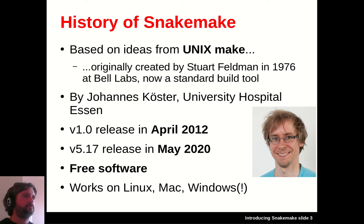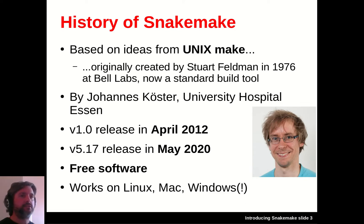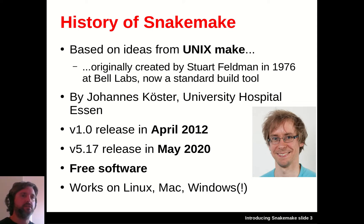Back when he was doing his PhD, a chap called Johannes Köster, who's currently based at University Hospital of Essen, decided he could do better. He wrote a tool inspired by Make, but he wrote it in Python — hence he called it Snakemake. Eight years later, Snakemake is still very much in development. It's got quite a large user community, it's an established piece of software, it's completely free like Python, and it will run on pretty much any computer — Linux, Mac, or even Windows.